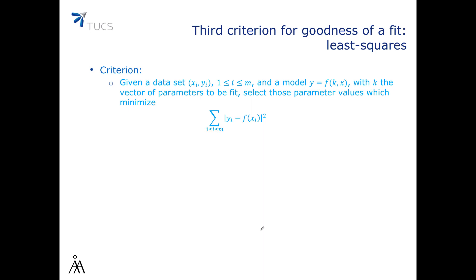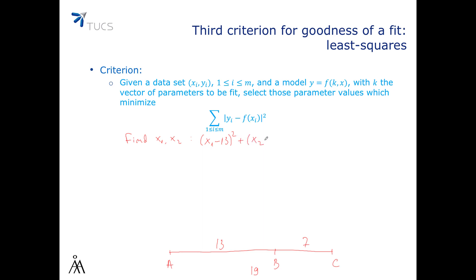For our example, we have segment AC with point B in between, given lengths 13, 7, and 19. We must find x1 and x2 such that (x1 − 13)² + (x2 − 7)² + (x1 + x2 − 19)² is minimal.